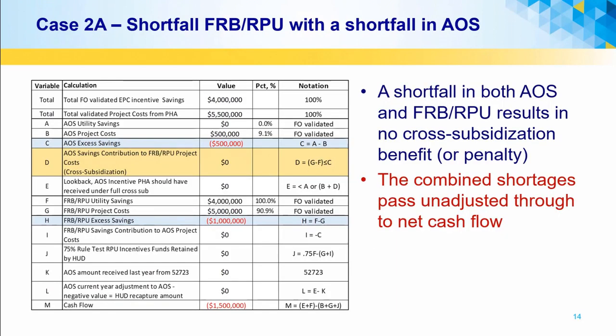When add-on subsidy has a shortfall in savings, there is a potential to use frozen rolling base and RPU excess savings to cover add-on subsidy associated project costs, except when frozen rolling base and RPU also has a shortfall. The aggregate shortfall of $1.5 million propagates entirely through to the cash flow net cash available after costs (variables C, H, and M). Because both frozen rolling base RPU and add-on subsidy are in shortfall, there is no cross-subsidization benefit available to alleviate the cash shortage, but there is also no recapture of savings.